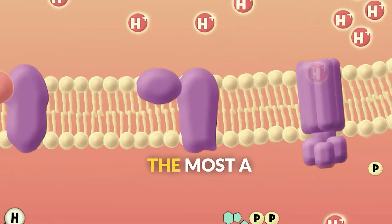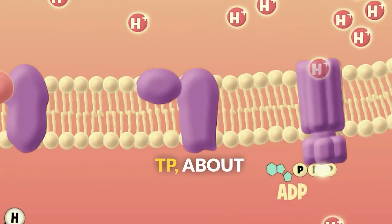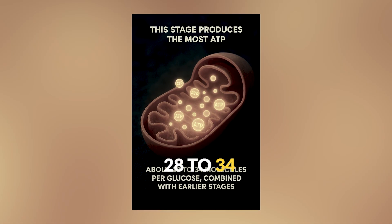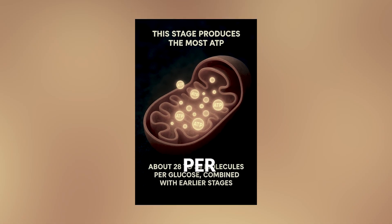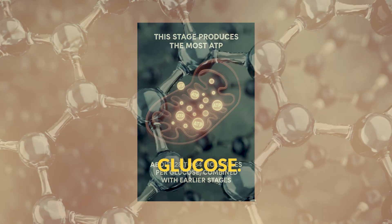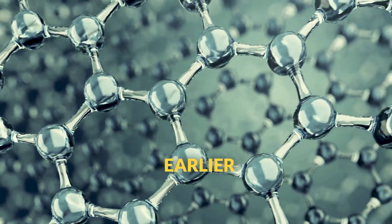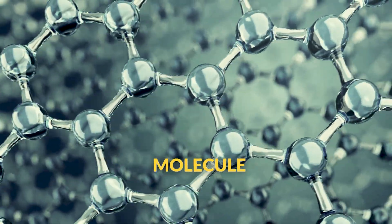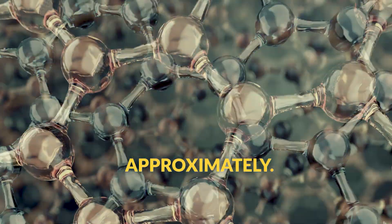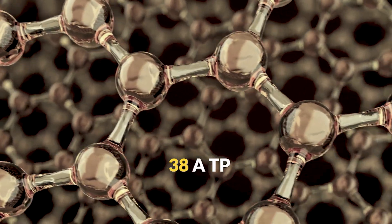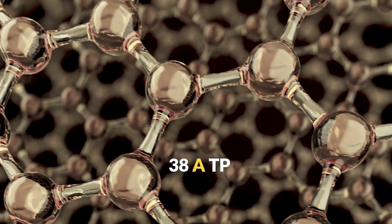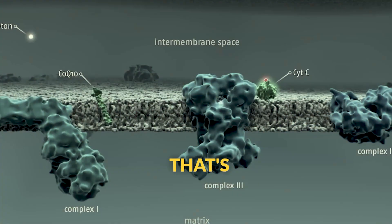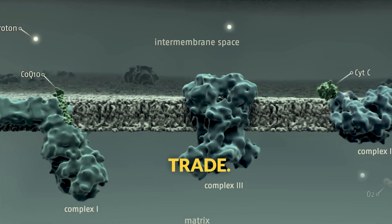This stage produces the most ATP — about 28 to 34 molecules per glucose. Combined with earlier stages, one glucose molecule yields approximately 32 to 38 ATP molecules total. Now that's a good trade.